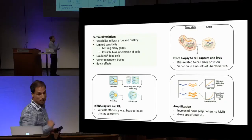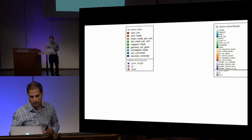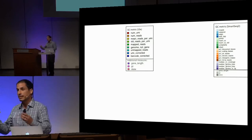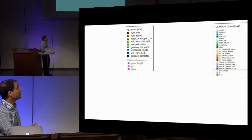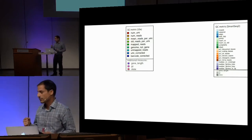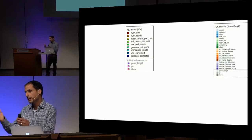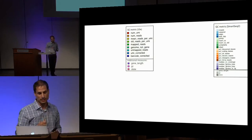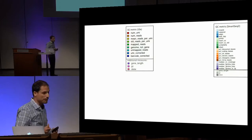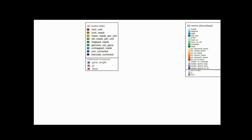We have all of these confounding factors, and this is just to convince you that they are indeed important. When we have single-cell RNA-seq FASTQ files, we can extract a very long list of parameters or features that give us some proxy for these different quality issues. Some of these relate to the depth of the library, some to alignment statistics, and some to possible gene-level biases in the data.